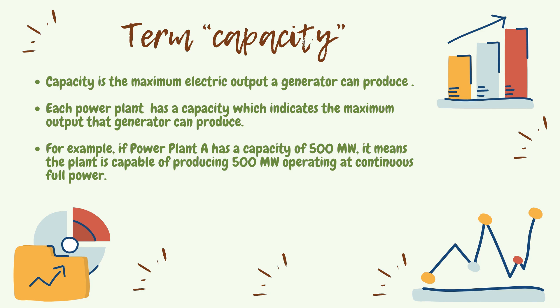Each power plant has an installed capacity which indicates the maximum output the generator can produce. For instance, if power plant A has an installed capacity of 500 megawatts, it means the plant is capable of producing 500 megawatts operating at continuous full power.